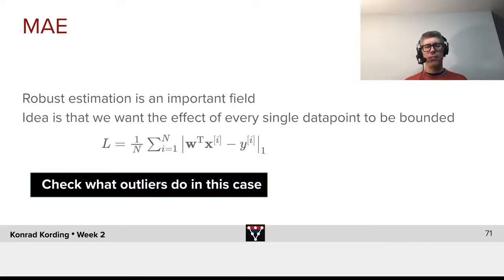There's an alternative: mean absolute error. Robust estimation is an important field for people who don't know that field yet. It is, how can we do estimates in domains where occasionally we have outliers? The idea is that we want the effect of every single data point to be bounded.